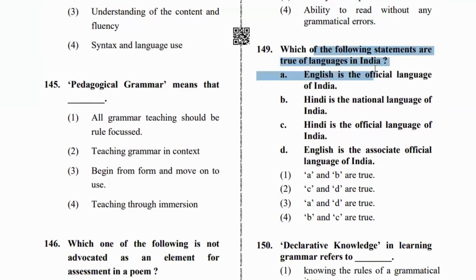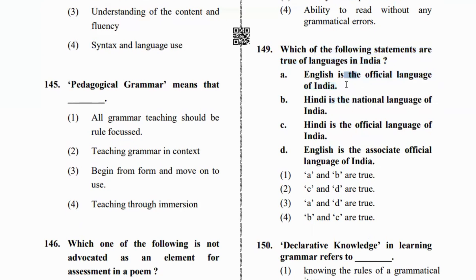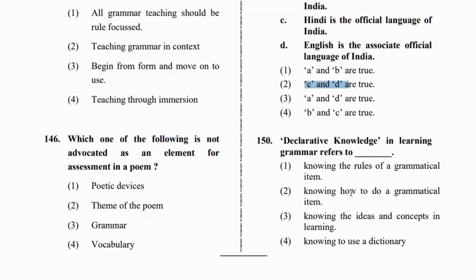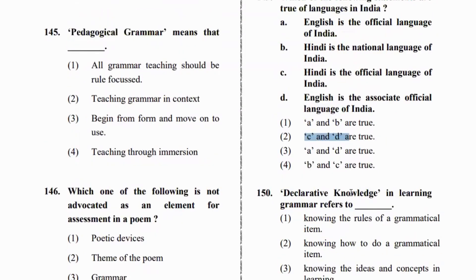Next question: which of the following statements about languages in India is true? English is the official language of India — is this true or false? Hindi is the national language, and Hindi is the official language of India. English is the associate official language of India. So options C and D are correct.